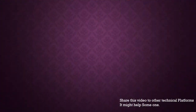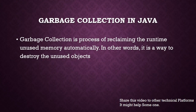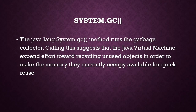What is garbage collection in Java? Garbage collection is the process of reclaiming runtime unused memory automatically — in other words, it's a way to destroy unused objects. Related to this: what does System.gc() do? The java.lang.System.gc() method runs the garbage collector. Calling this method suggests that the JVM expend effort towards recycling unused objects to make the memory available for quick reuse.